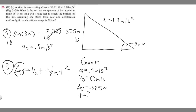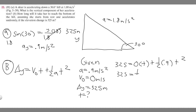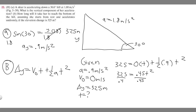Plugging everything in: 325 equals V-sub-0, which is 0, times T, plus one-half times A, which is 0.9, times T squared. The 0 times T term cancels, so we get 325 equals one-half times 0.9 times T squared. One-half times 0.9 is 0.45, so we have 0.45 times T squared equals 325. Dividing both sides by 0.45 gives us T squared equals 325 divided by 0.45.